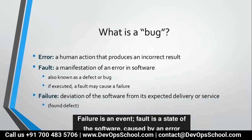Now, what is a bug? A bug and a defect are the same thing. A bug is the difference between expected and actual result. An error is a human action that produces an incorrect result — it is a human mistake. A fault is different from a bug.